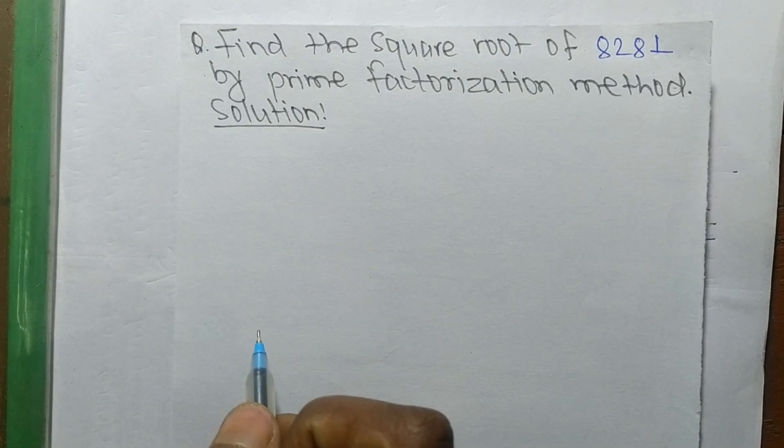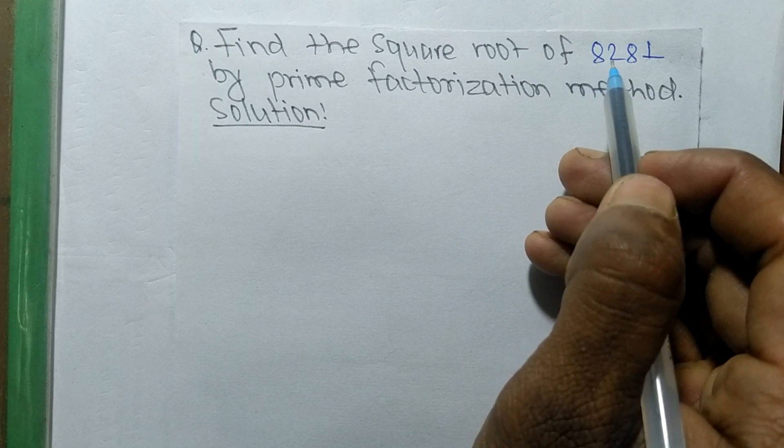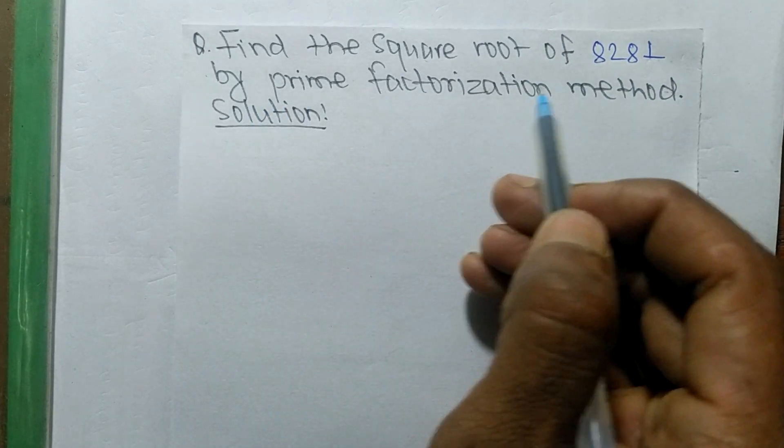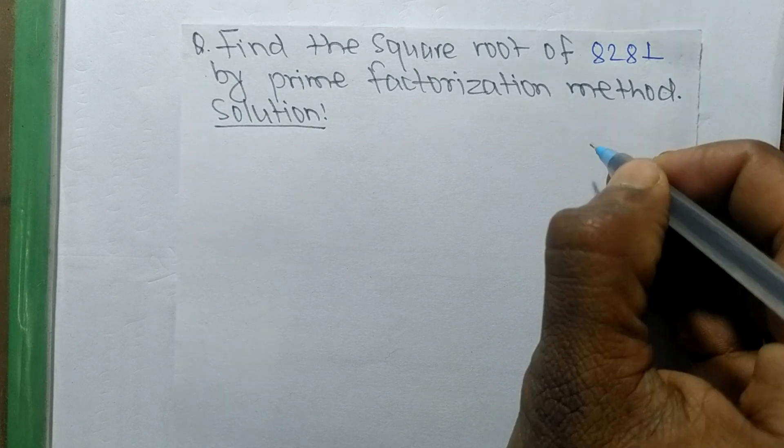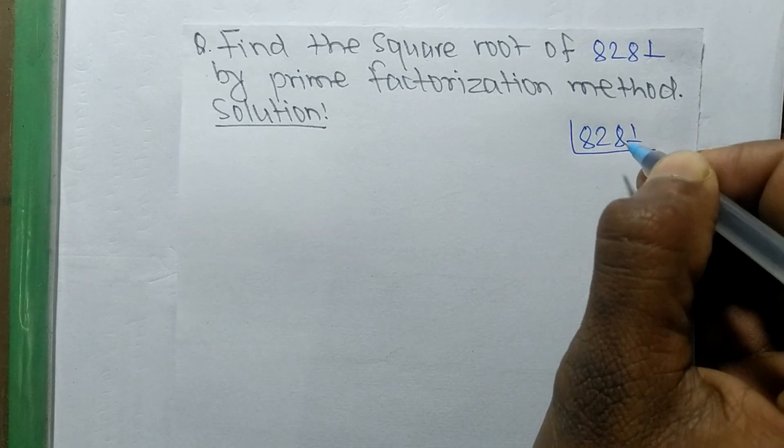Today in this video we shall learn to find the square root of 8281 by prime factorization method. So first of all, we shall find out the prime factors of 8281.